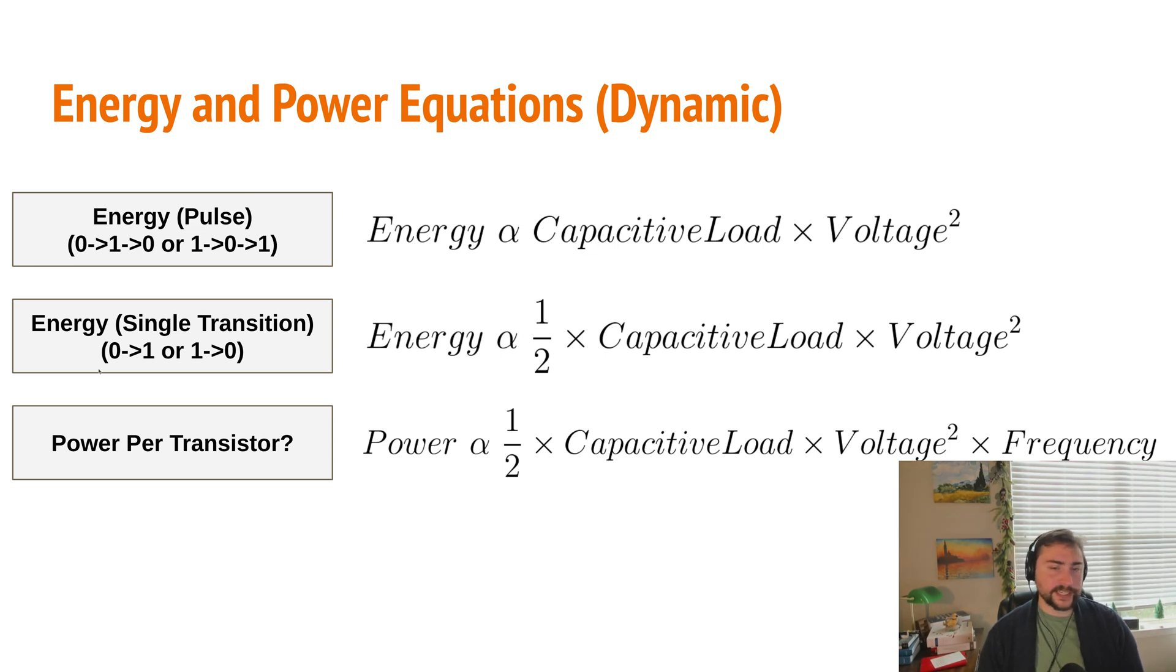We're typically more interested in the energy of a single transition here, transitioning from zero to one or one to zero, because at the end of the day, that's what our clock is doing - these transitions of zero to one or one to zero. So we can rewrite this equation by just inserting this one-half. The energy for a single transition is proportional to one-half our capacitive load times our voltage squared. Now to get our power from this energy, all we really need to do is multiply this by our frequency. We're multiplying the energy taken for a single transition times how fast we're doing these transitions, and that will give us our power.